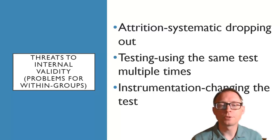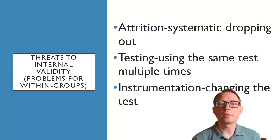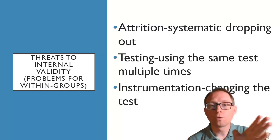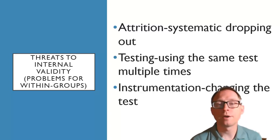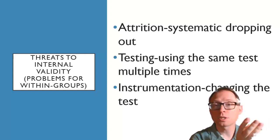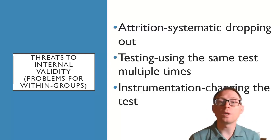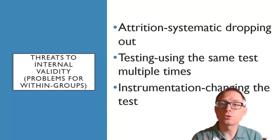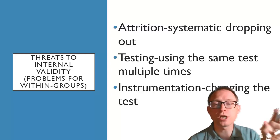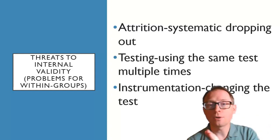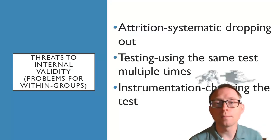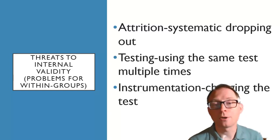Also, within-groups designs that happen over time with multiple testing may have attrition. When we think about studying causing happiness — measuring in January and then again after finals — could it be that the people who were least happy at the beginning of January are the most likely to drop out of school, or drop out of the study, by the end of finals? Attrition means that dropping out affects the overall score of happiness. If the least happy people drop out, the scores go up — not because of studying, but because the least happy people dropped out over the course of the semester.